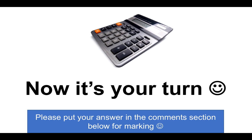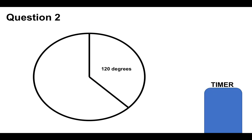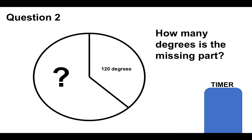Okay, question number two. Now it's your turn. Please put your answer to this next question in the comments section below the video for marking. Question number two: How many degrees is the missing part? The missing part is all this part here where the question mark is. You're already given 120 degrees, and you've got the time it takes that timer to come down to put your answer in the comments section below. Hopefully you found that relatively straightforward. If you know the degrees of a full circle, then you just need to subtract that from 120.